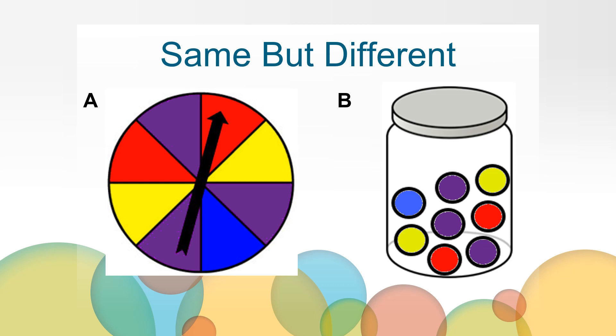Can you come up with another reason why they are the same but different? You may have noticed that they are the same because they both have red, purple, yellow, and blue outcomes. You may have noticed that they both have three purple, two red, two yellow, and one blue. You also may have noticed that there are eight sections on the spinner and eight marbles in the jar.